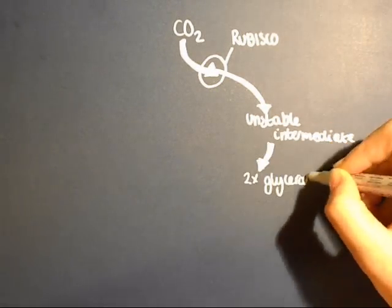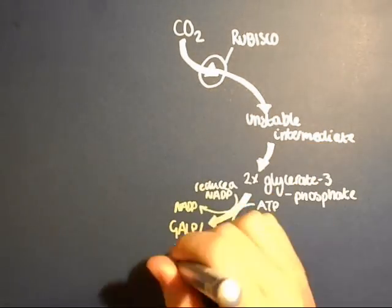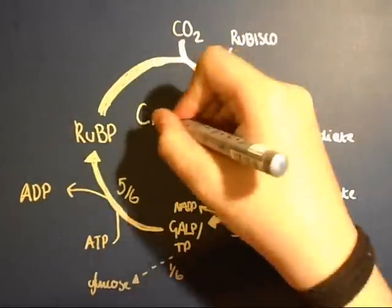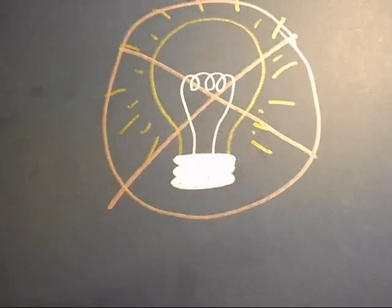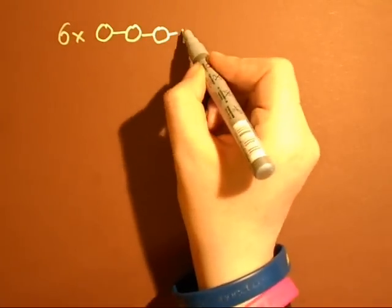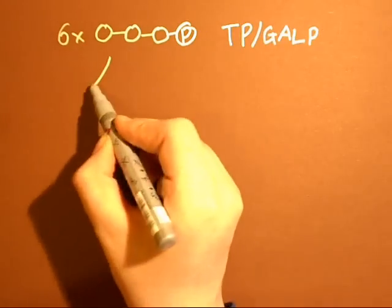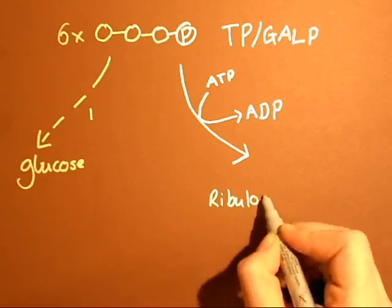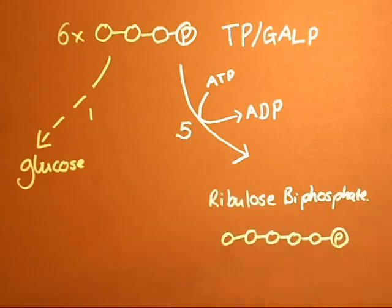Whoa, the Calvin cycle! Whoa, the Calvin cycle! Whoa, the Calvin cycle — light independent photosynthesis. Triose phosphate, 3-carbon G3P. A sixth is used last to make glucose. Then ATP, NADPH goes out, ATP goes out. The rest makes ribulose bisphosphate.